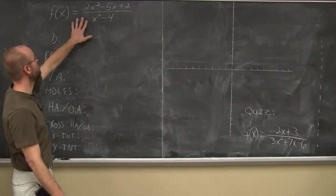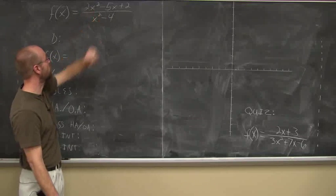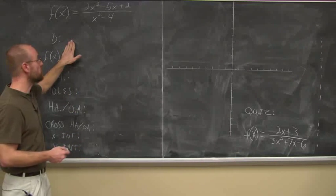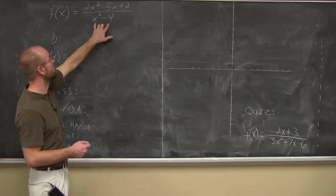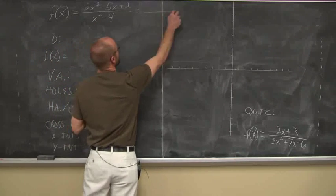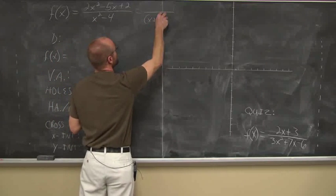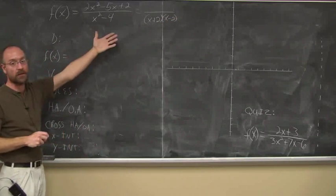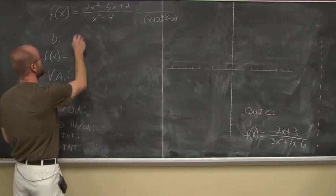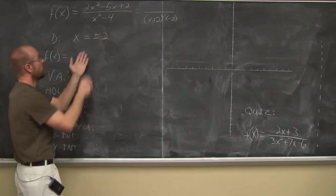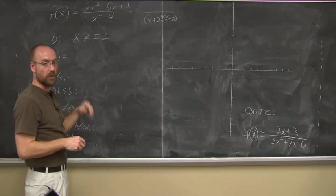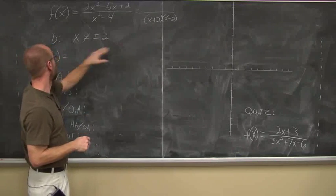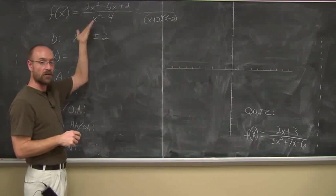Here we have a rational function: f(x) equals (2x² - 5x + 2) divided by (x² - 4). The first thing we want to do is find the domain. If I factor the denominator, I get (x + 2)(x - 2). The values that would make that 0 are x equals plus or minus 2. Those are excluded, so my domain is x such that x is not plus or minus 2.